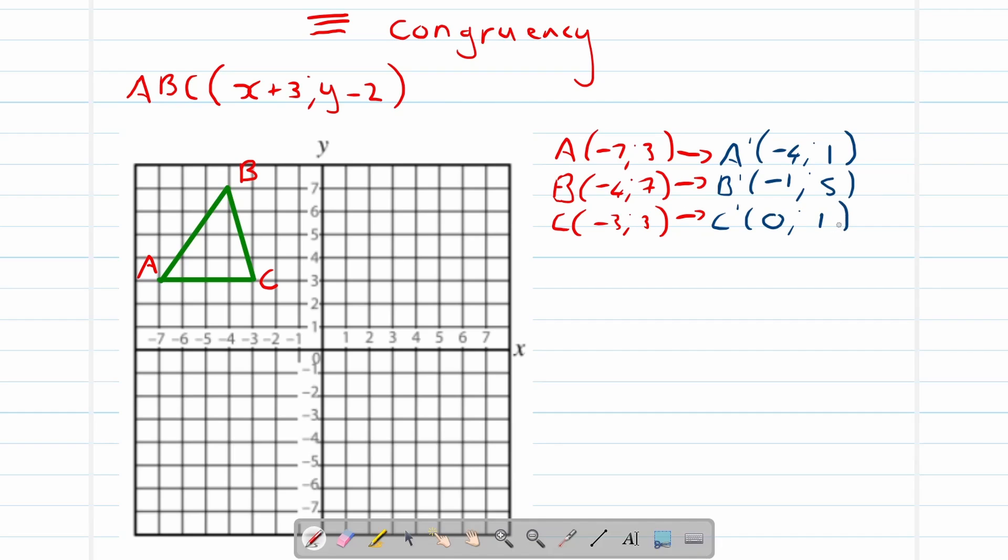Let's plot these coordinates. So A's new coordinate is negative 4 and 1, so right over there, and that is A accent. B's new coordinate is negative 1, 5, and it will be right over there.